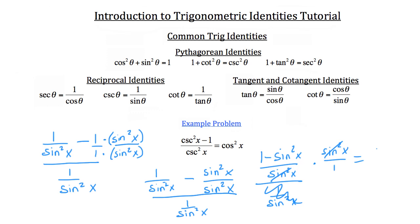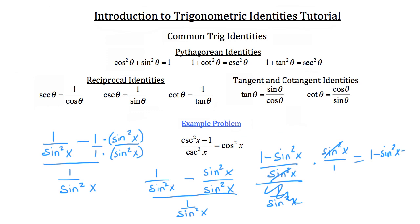All of this work reduced to 1 minus sine squared x, which is equal to cosine squared of x. This is the Pythagorean identity, and we're going to use that. I'll add sine squared of x to both sides of the equation to get rid of it on the left-hand side. The negative sine squared of x cancels on the left, and we have just 1, equal to the right-hand side: cosine squared of x plus sine squared of x.